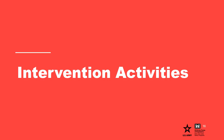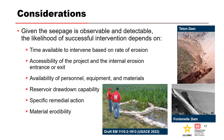We'll discuss intervention activities and how we take those into account during risk assessment. Intervention efforts are likely to occur during all phases of the internal erosion process. Given the seepage is observable and detectable, the likelihood of successful intervention depends on several factors, including the time available to intervene based on the rate of erosion, which is a function of material erodibility, the accessibility of the project, and the availability of personnel, equipment, and materials. Reservoir drawdown below a flaw or to reduce hydraulic gradient is the most successful intervention for large dams. Large events can have regional impacts, which can limit the availability of personnel since they may be spread out over several projects.